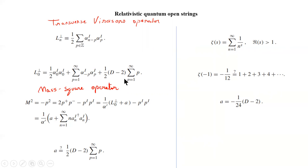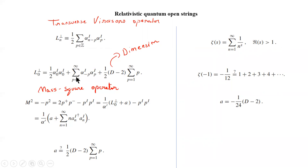This d is the dimension of spacetime. And here there is just an infinite series over p, so this is just a constant. The value n equals zero only contributes to this. Therefore we write it out separately, and the rest of the terms in the series we write in this summation.